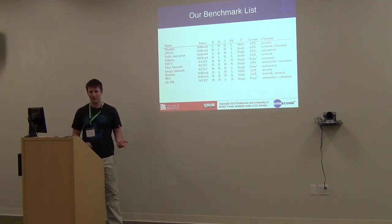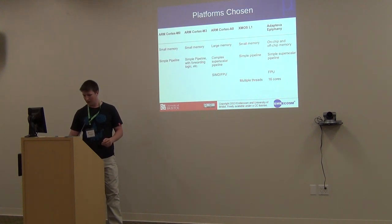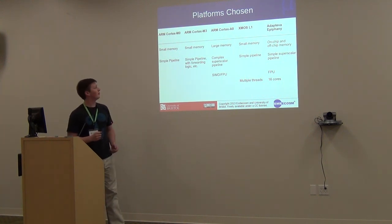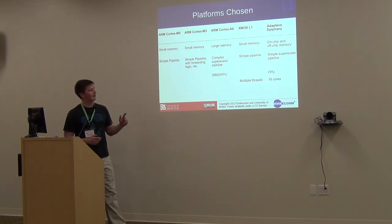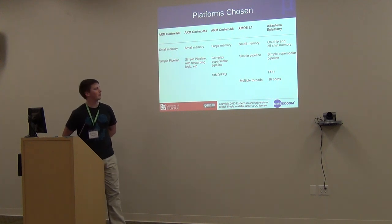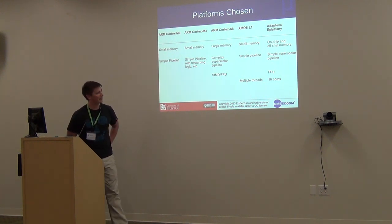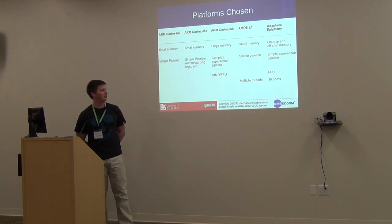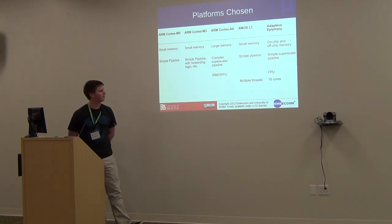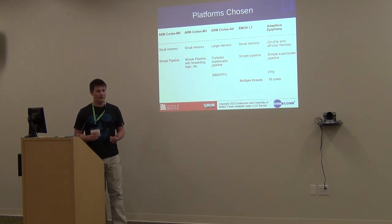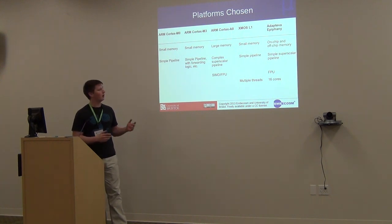The platforms we chose are embedded: small platforms with small amounts of memory and simple pipelines mostly. For example, the M0 has only 32 kilobytes of memory. The standout one is the A8, which has a more complex pipeline and more cache than the M0. There's also the Epiphany with 16 cores and the XMOS with eight hardware threads. These have a good range of pipeline lengths, memory sizes, and even different instruction sets, so we should be able to draw conclusions about which optimizations work well on which types of processor.